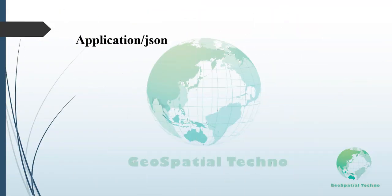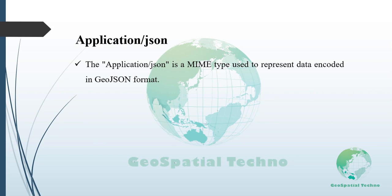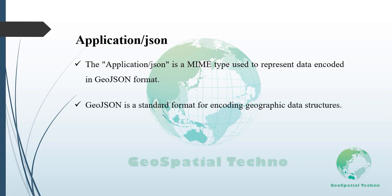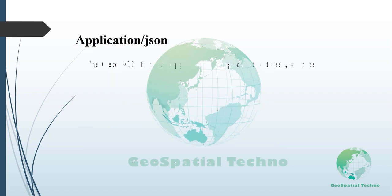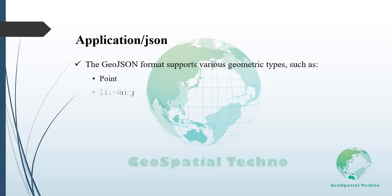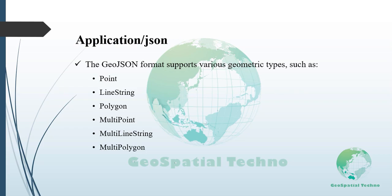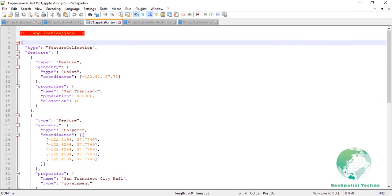Application/JSON is a MIME type used to represent data encoded in GeoJSON format. GeoJSON is a standard format for encoding geographic data structures based on the JSON format, allowing representation of simple geographic features along with associated non-spatial attributes stored in the properties object. The GeoJSON format supports various geometry types such as Point, LineString, Polygon, MultiPoint, MultiLineString, and MultiPolygon.